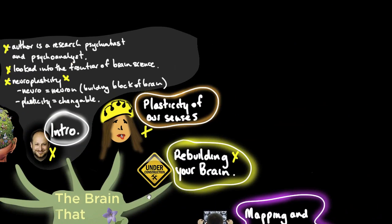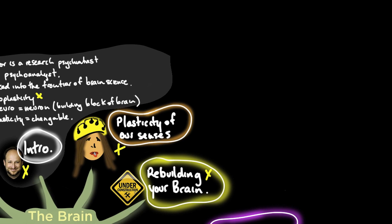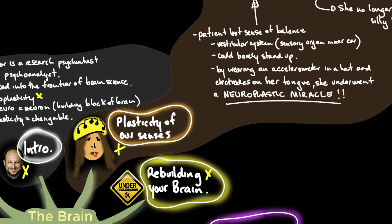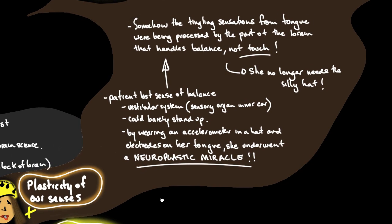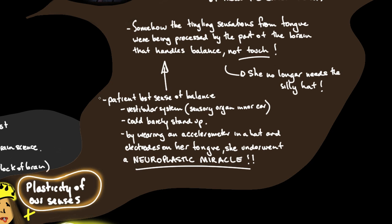The first topic is the plasticity of our senses - how the brain can adapt to take different input from sensory organs. This is how the presentation and book are organized - it brings things to life through case studies and patients.